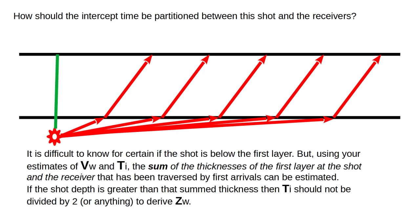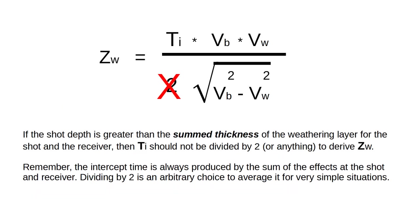How should the intercept time be partitioned between the shot and the receivers? It is difficult to know for certain if the shot is below the first layer. But using your estimates of the weathering velocity and the intercept time, the sum of the thicknesses of the first layer at the shot and the receiver traversed by the first arrivals can be estimated. If the shot depth is greater than that sum thickness, then the intercept time should not be divided by two or anything to derive the weathering thickness.